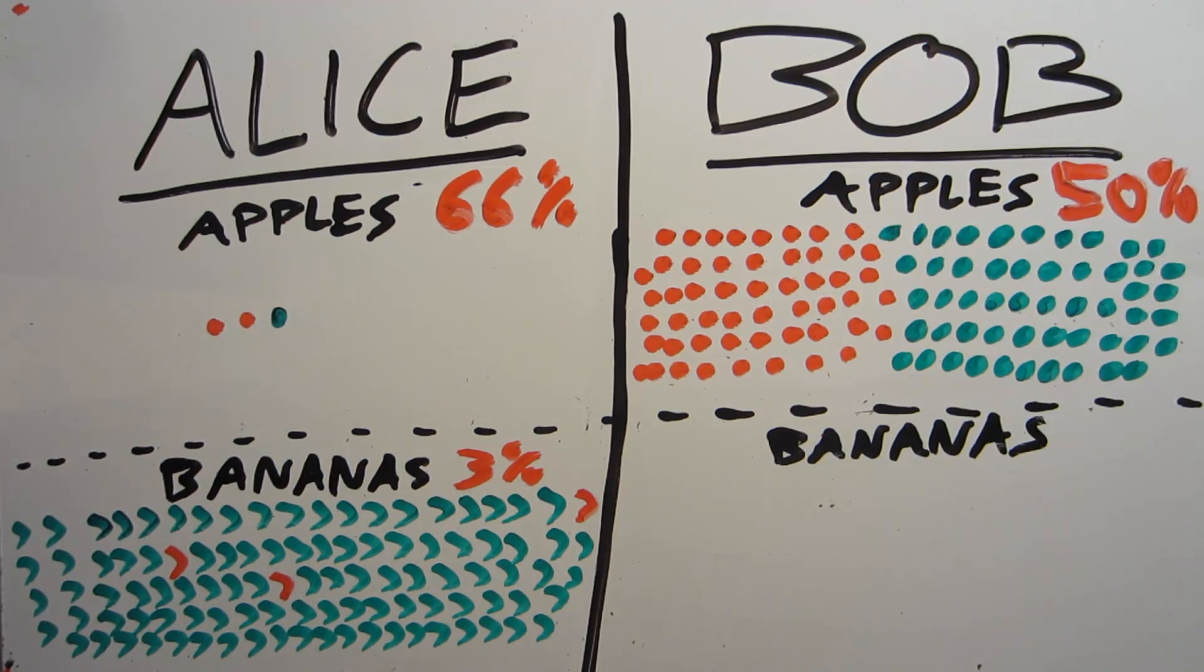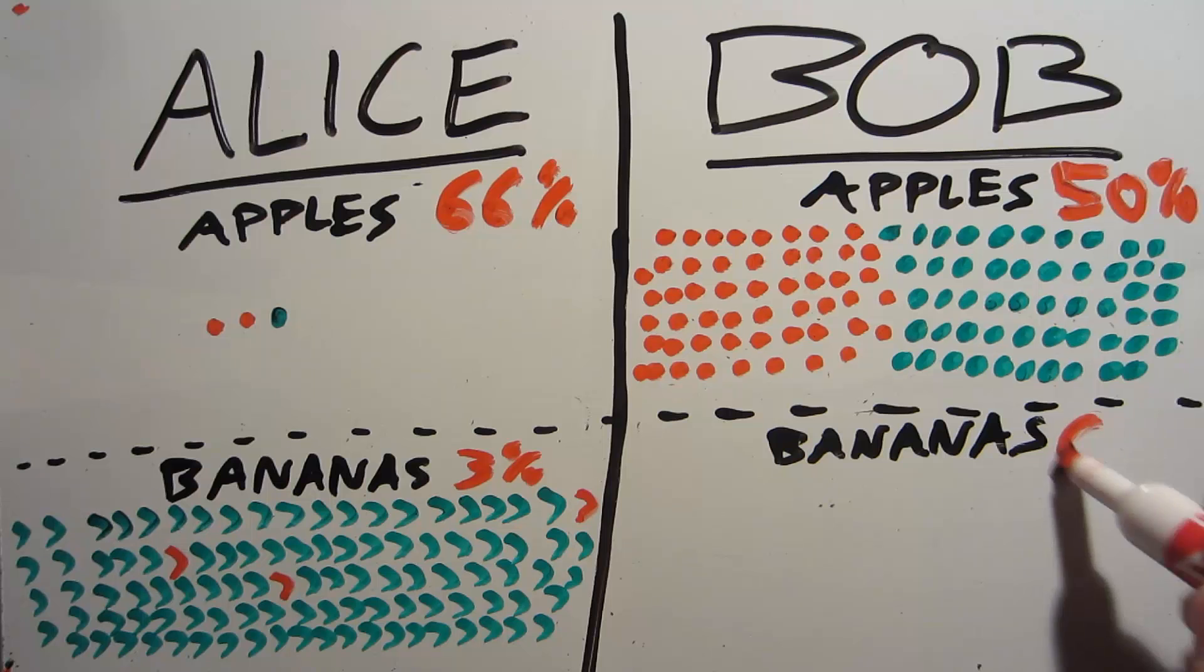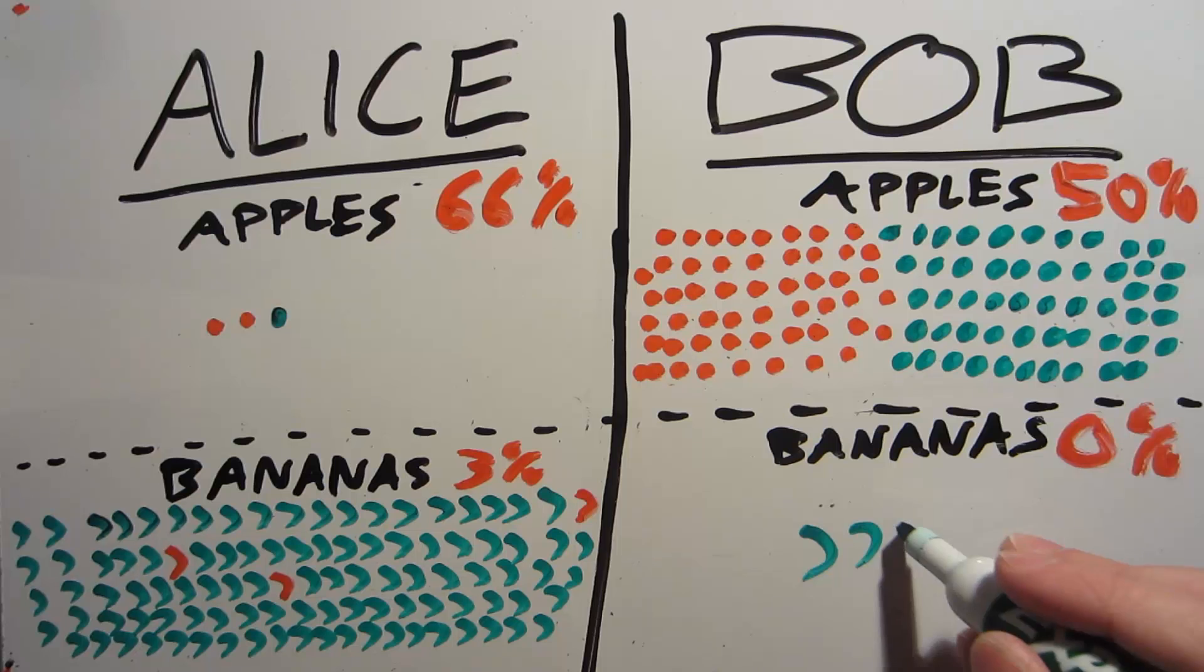Now Bob turns to his bananas and points out that he has a 0% bad banana rate, because in fact he only has three, and all three of these are good bananas.